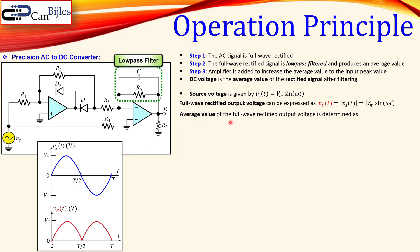The average value of the full-wave rectified signal VF is given by an integral expression. You don't have to integrate all the way from 0 to T — you only need to integrate from 0 to T/2, which covers one period as shown here. The Vs expression is substituted into the integral and worked out.